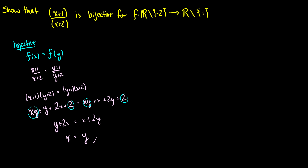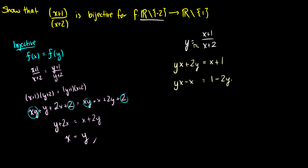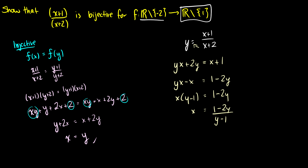Now we show surjectivity. Set y = (x + 1)/(x + 2), noting x ≠ −2 since we're in the domain without −2. Multiplying out: y(x + 2) = x + 1, so yx + 2y = x + 1. Bringing x's to the left: yx − x = 1 − 2y. Factoring: x(y − 1) = 1 − 2y, so x = (1 − 2y)/(y − 1). We see y cannot equal 1, but that's fine since our codomain is ℝ \ {1}.